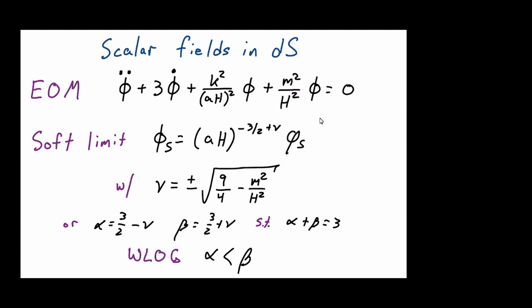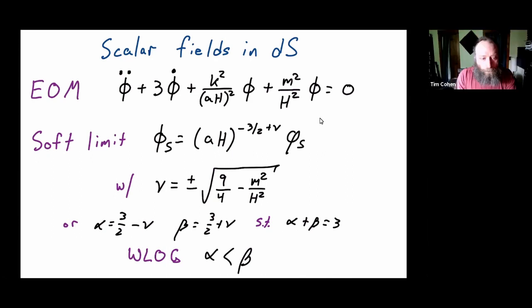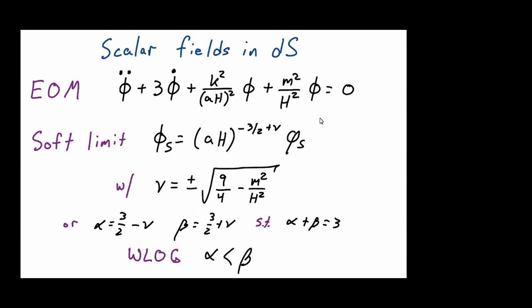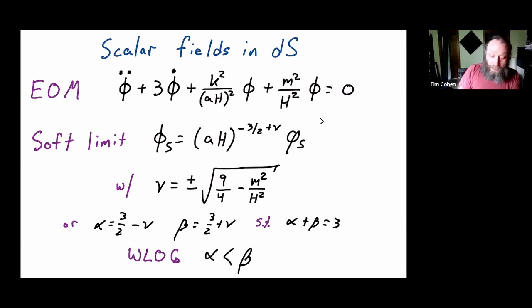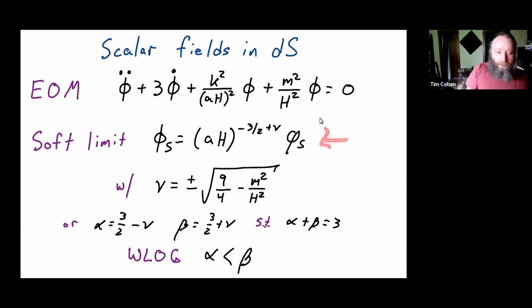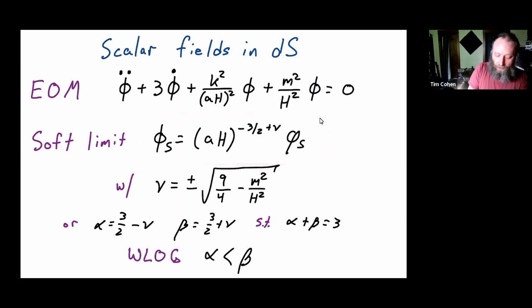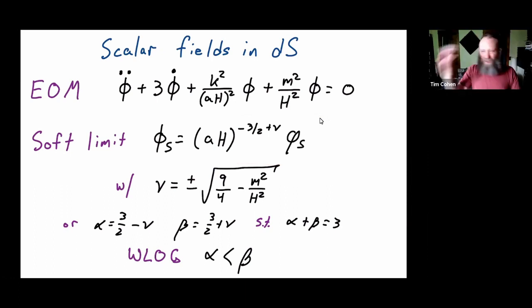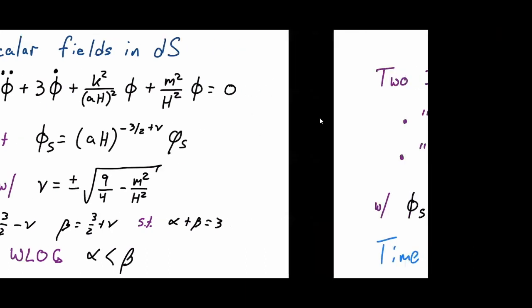Audience: In the soft limit, you keep the M-squared term but drop the K-squared term — are you assuming M-squared is larger than K-squared over a-squared? Tim: That's right. I'm interested in doing an expansion, and this formula gets corrections of order K-squared over H-squared plus logarithmic corrections, but my power counting truncation is at this leading order. The mass is just coming along for the ride.